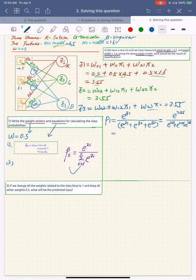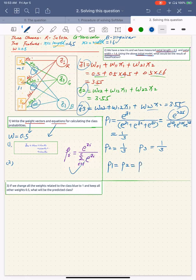So obviously, we have the result, 1 over 3, same as p2 and p3, because all these z results are same. So the conclusion is p1 equals p2 and equals p3, they are all same. So we could not get the result of classification based on the all same probability.